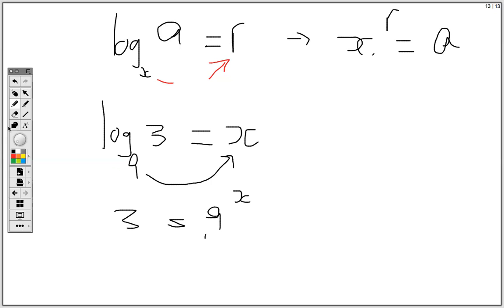Now we know from indices that we can make the base be the same. So to make the base be the same, I will change the base so it becomes 3 to the 1 equal 3 squared to the x, which is 3 to the 2x. And we know from indices that once the bases are the same, we can drop the base and equate the powers to be equal. So we have 1 equal 2x, then divide both sides by 2. So x is equal to a half.